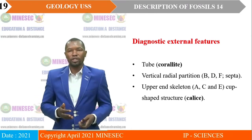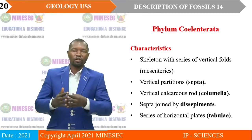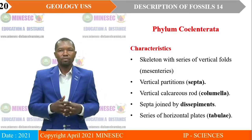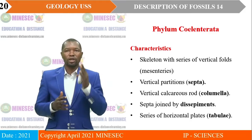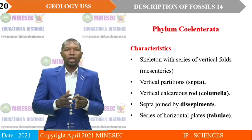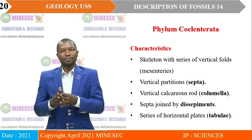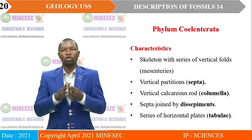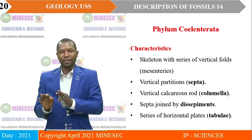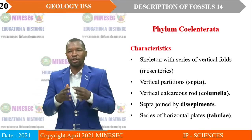This guides us to our topic of discussion: the phylum Coelenterata. Generally, fossils that fall under this phylum have a skeleton with a series of vertical folds or mesenteries. There is vertical partitioning referred to as the septa — that is the plural; the singular is septum. They also have the vertical cartilaginous rod referred to as the columella. The septum is joined by dissepiment — remember that dissepiment are cross bars — which keep the shell stable. They also have a series of horizontal plates referred to as tabula.